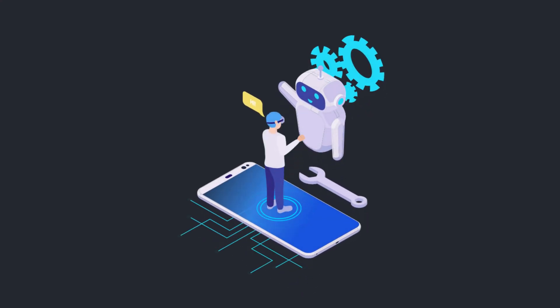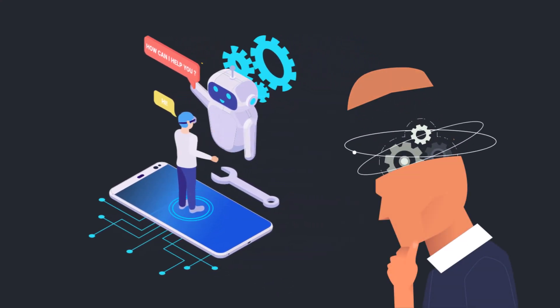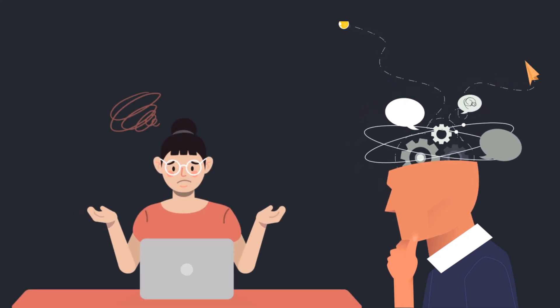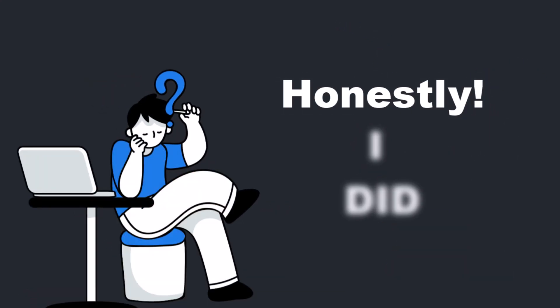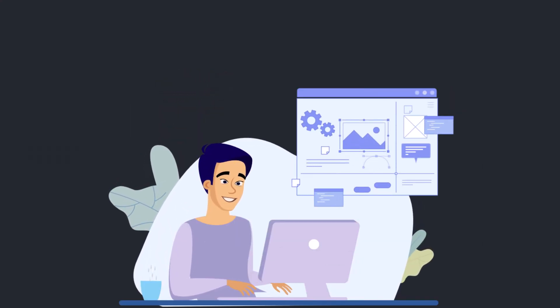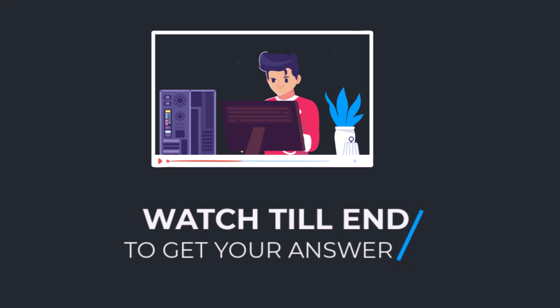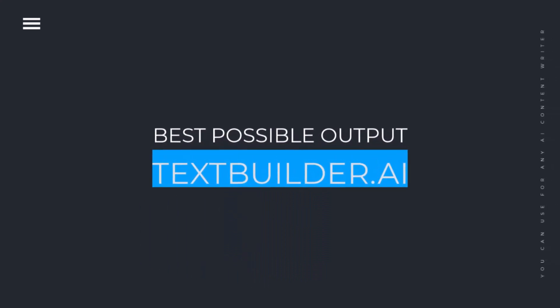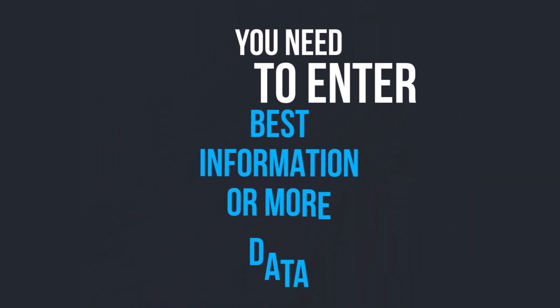While using an AI content writing tool, have you ever thought that you are not able to get the result that you want? Honestly, I did. Now you don't need to worry about this problem, because in this video I will tell you how you can get the best possible output from your AI text builder tool. To get the best possible result, you need to enter the best information — more data and context.